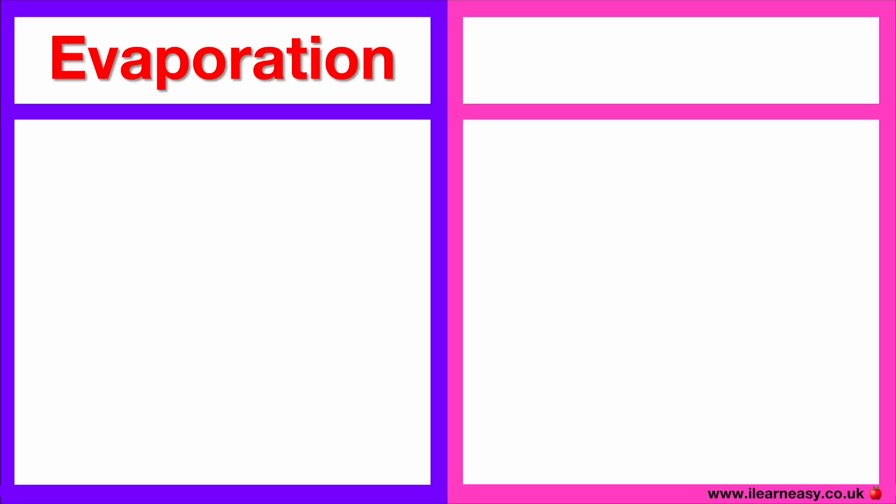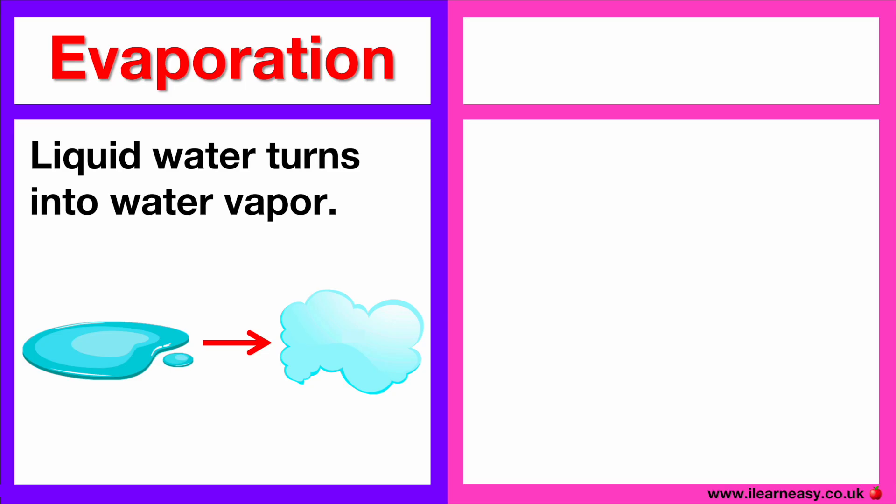Evaporation is the process of liquid water turning into water vapor. This occurs just before a liquid reaches its boiling point. This happens when water molecules gain enough kinetic energy to evaporate.